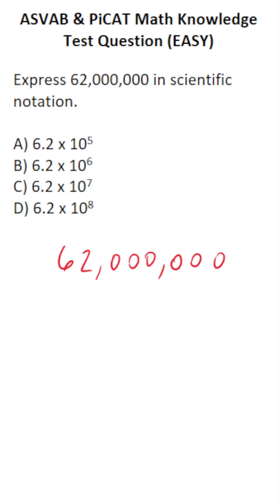Again, we're trying to write 62 million in scientific notation. It's going to look like this: 6.2 times 10 to some power. How do we determine what this power is?